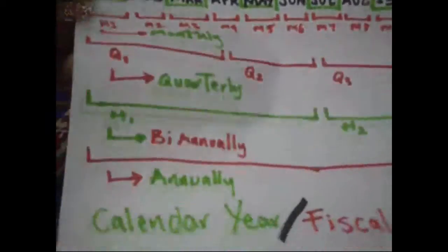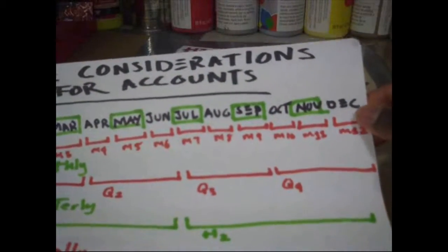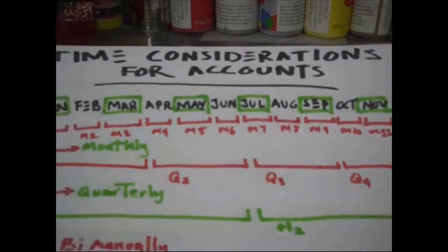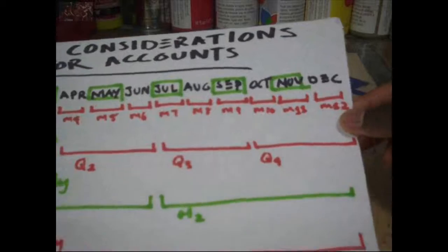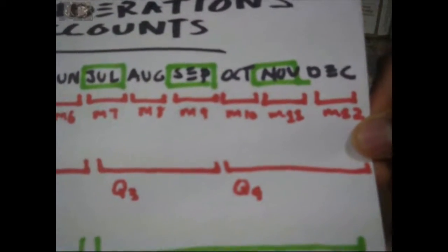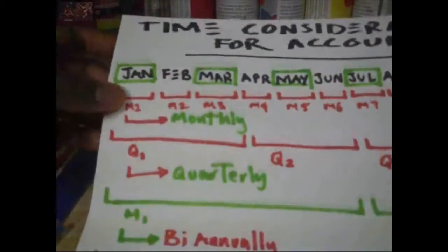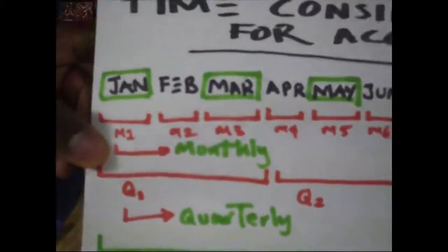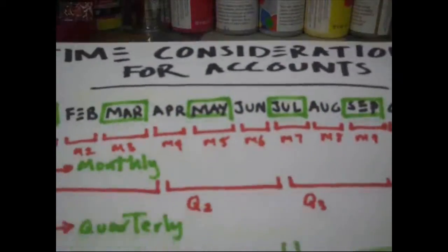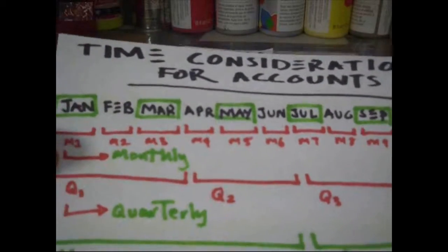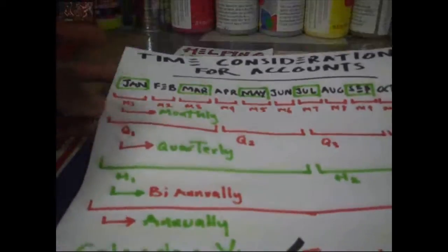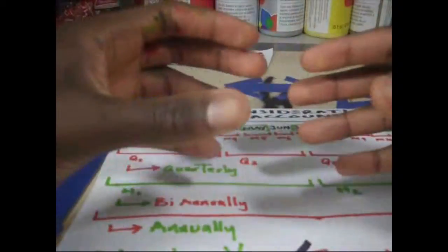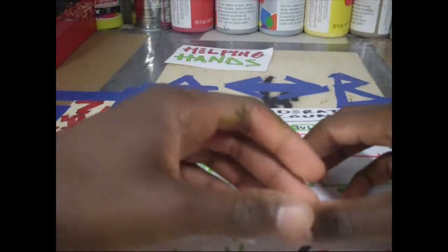Part of what makes that comparison valid is the time period. So if we say a monthly report — January to December, all 12 months of the year — if we say monthly, it's M1, M2, all the way to M12. My handwriting is atrocious — let's blame the markers. M1 all the way to M12 are the monthly reports, so M2 would be February, M3 would be March.